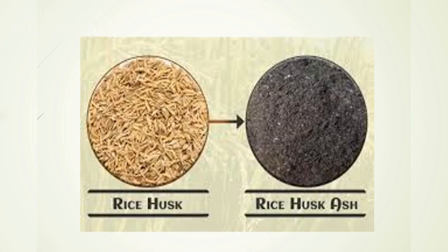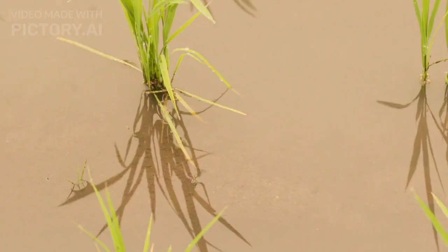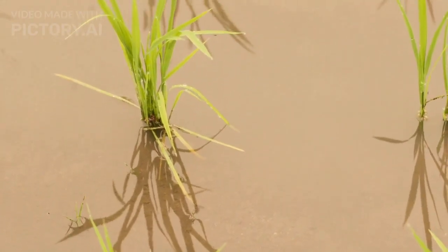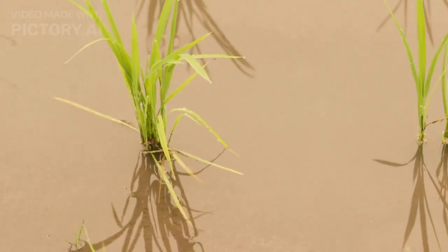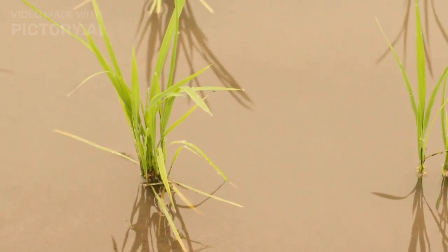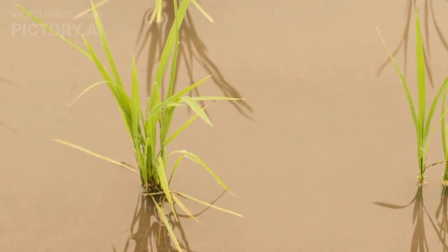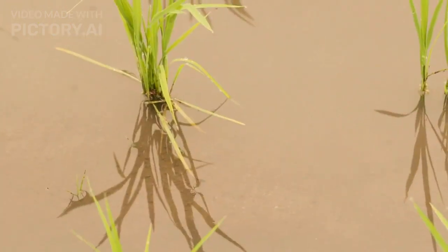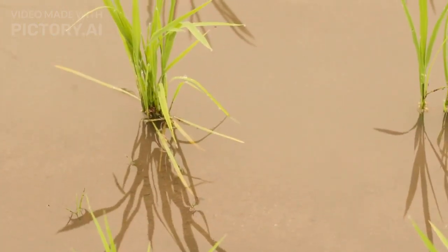The husk contains about 75% organic volatile matter, and the balance 25% of the weight of this husk is converted into ash during the firing process. The ash is known as rice husk ash or paddy husk. Paddy husk, a by-product of the rice industry, contains 60–90% of silica and is unique within nature. This silica is the main ingredient in making detergent, as it gives soluble sodium silicate after processing.